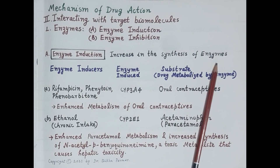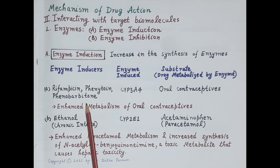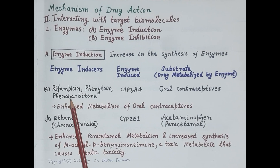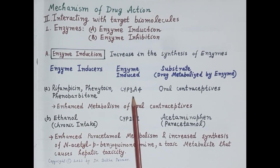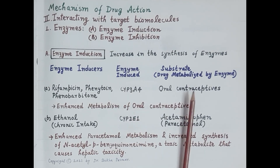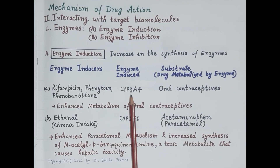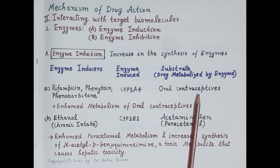Examples of enzyme induction: rifampicin, phenytoin, and phenobarbitone target enzymes and are called enzyme inducers. These drugs induce increased synthesis of the enzyme cytochrome P450 3A4. This enzyme metabolizes oral contraceptives. Increased synthesis of cytochrome P450 3A4 enhances the metabolism of oral contraceptives, thereby reducing their efficacy in preventing pregnancy.